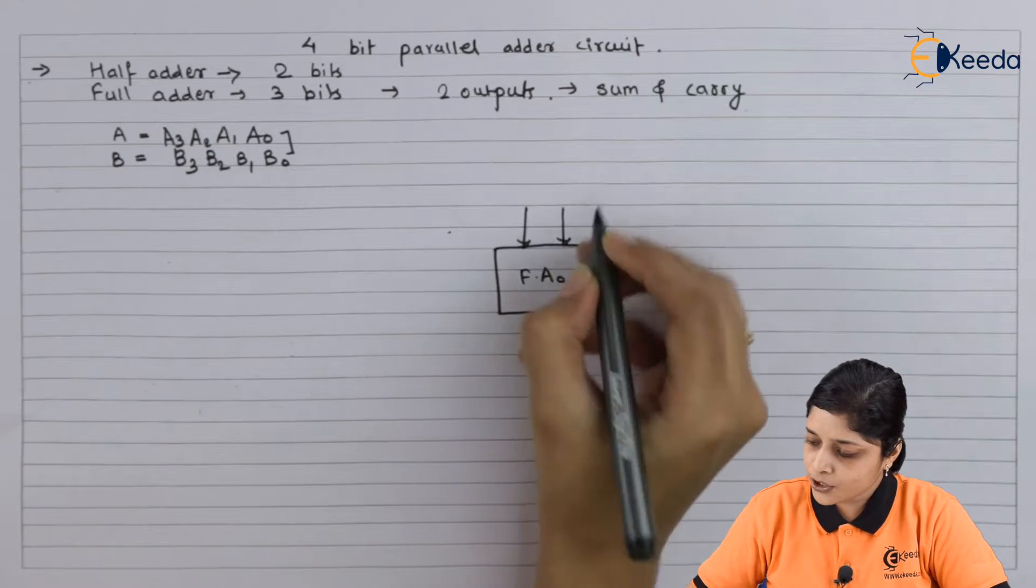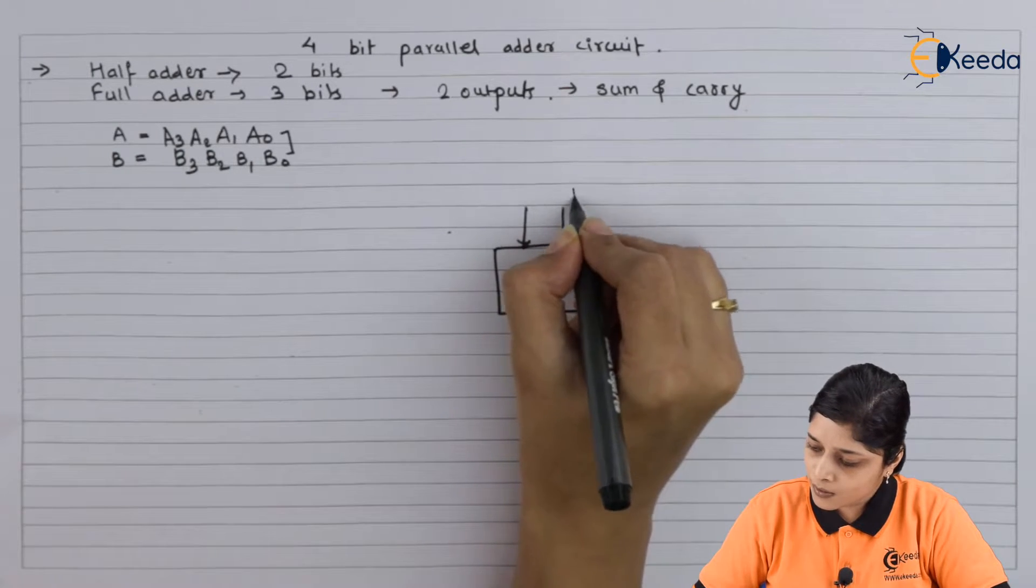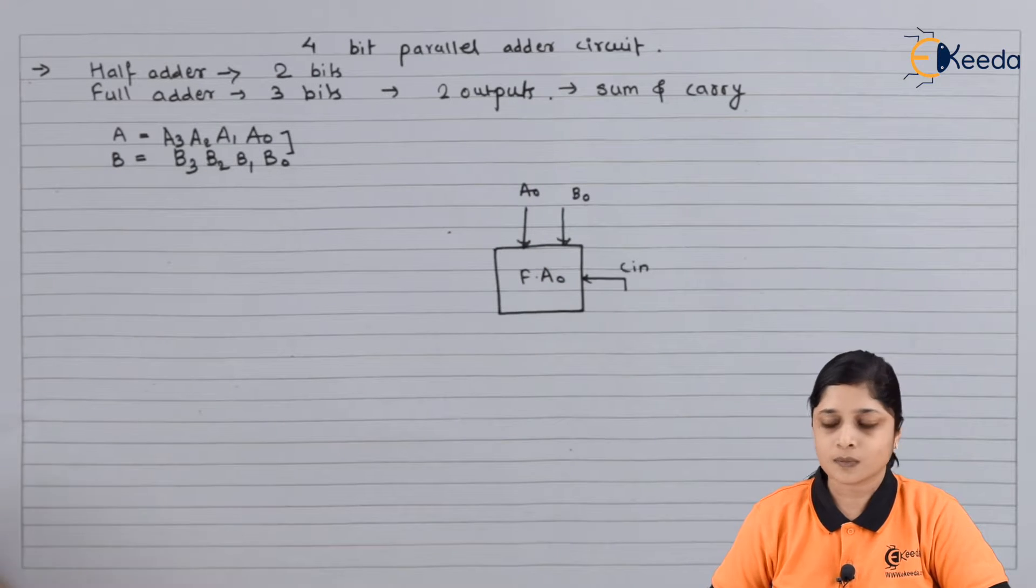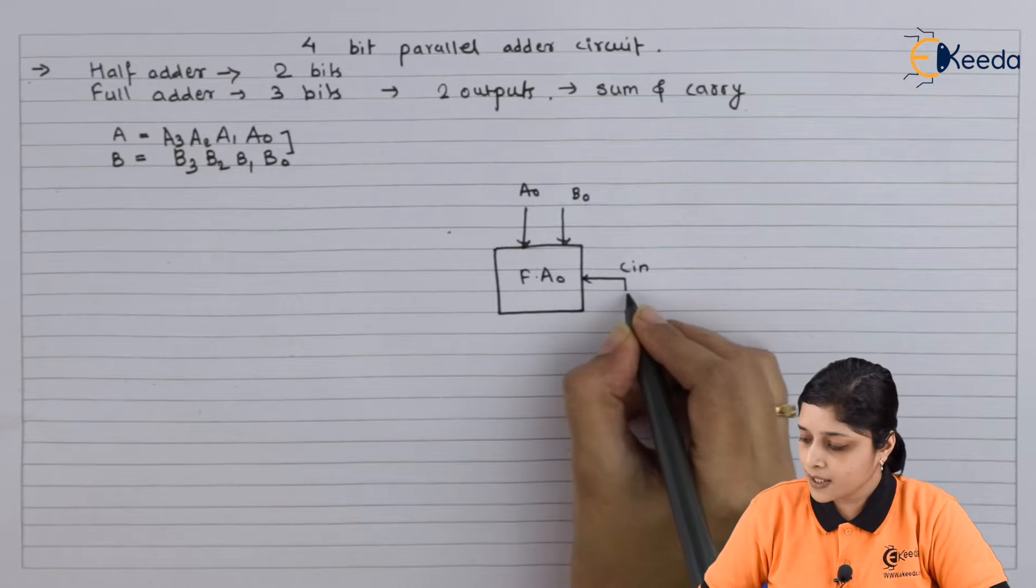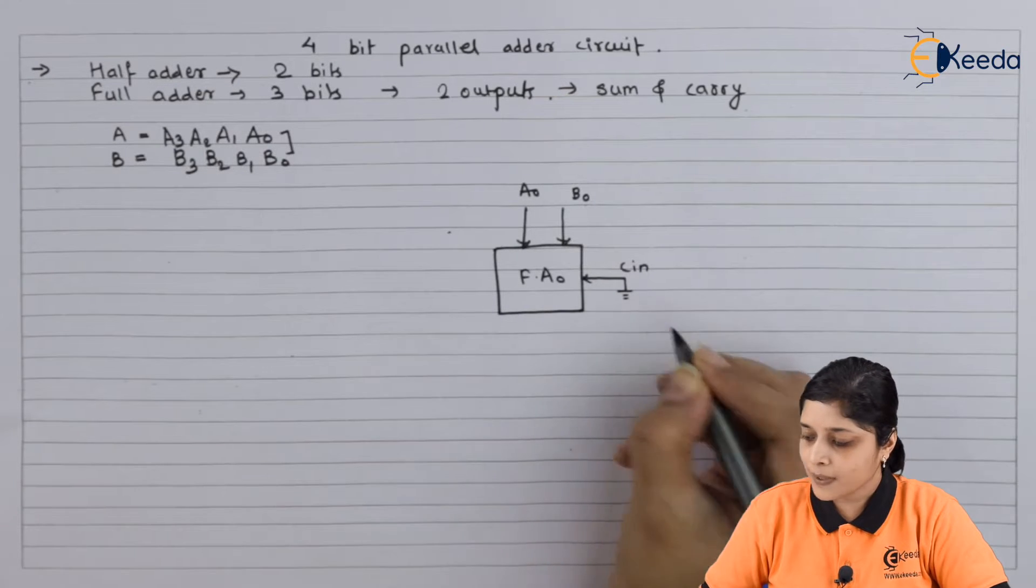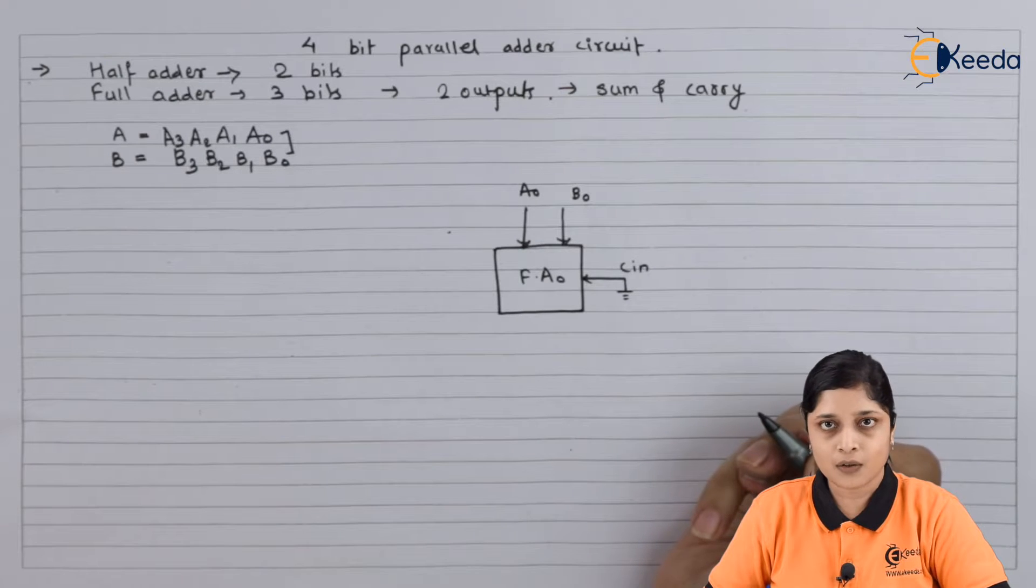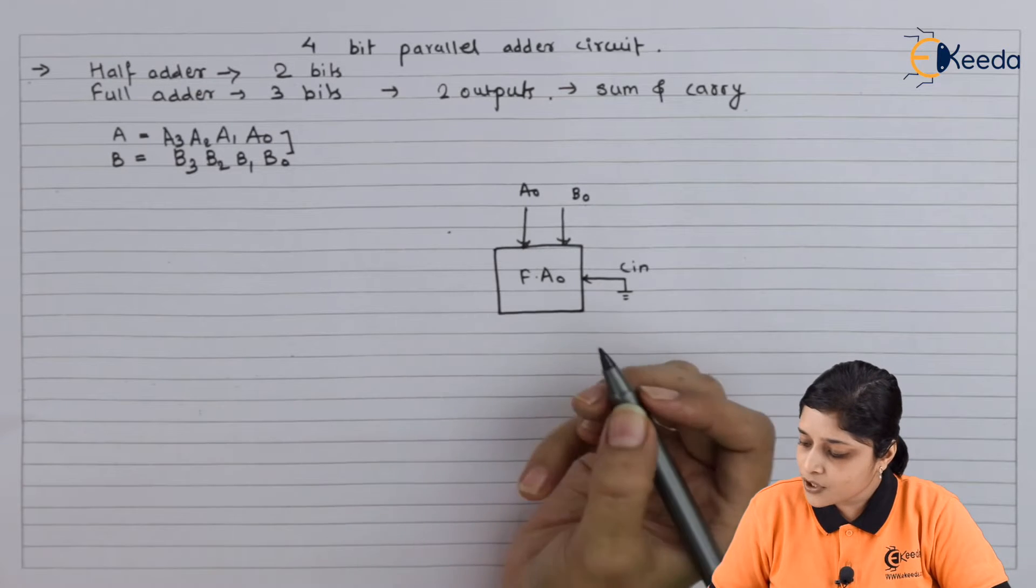Here for addition of B0 and A0, initially LSB is 0, that's why we can make here logic 0 by making ground.